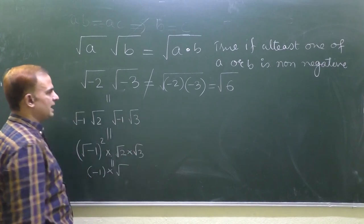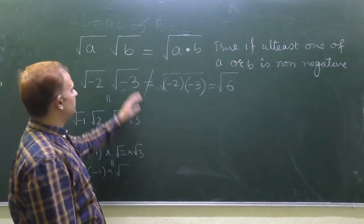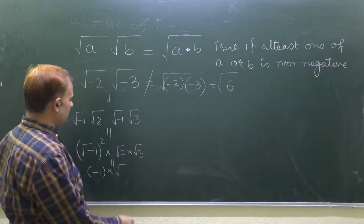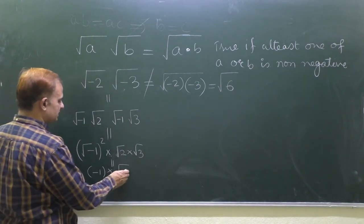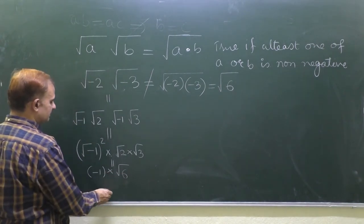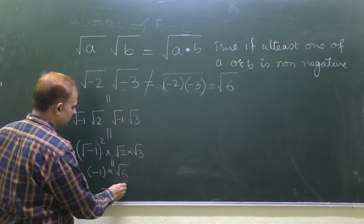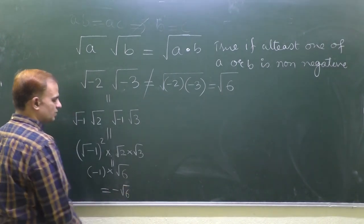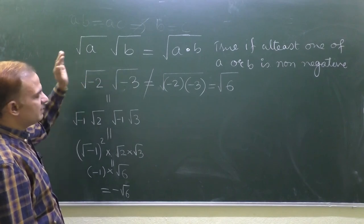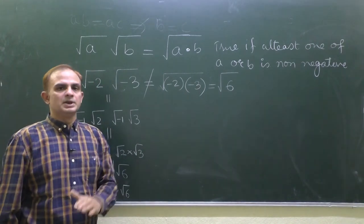Now since both the numbers are positive, therefore this result is applicable and that is why this is root 6. And the final answer of this is minus root 6. This is a very important and very conceptual question.